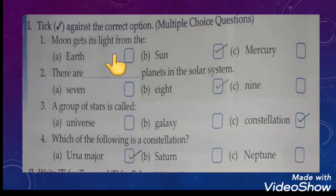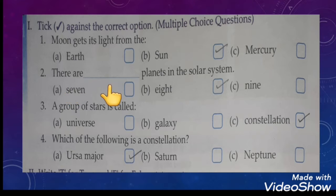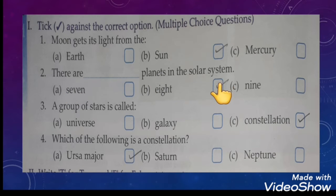Moon gets its light from the sun, and all the other planets also get their light from the sun. There are dash planets in the solar system — how many planets are there in the solar system? The total number is eight planets.